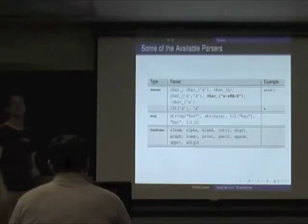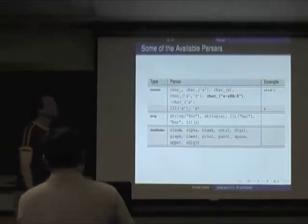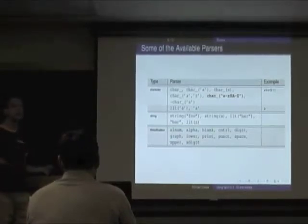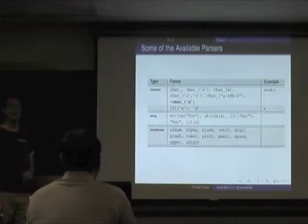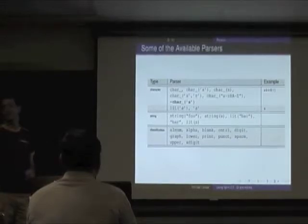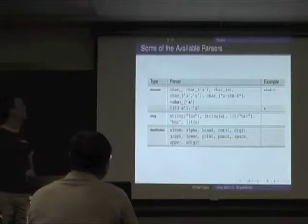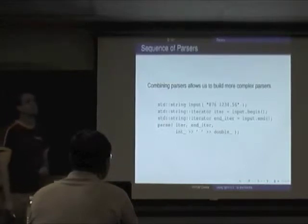A character set is a little different — it says parse lowercase a through z, the number eight, and uppercase A through Z, so the parser accepts anything matching that set. One of my favorites: you can negate the parser — parse everything that is NOT 'a'. You can do the same with a character set — any character that is not in that set. This only works with the character parser. But we want to start combining these things.